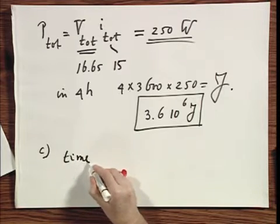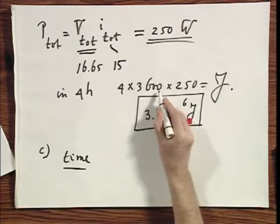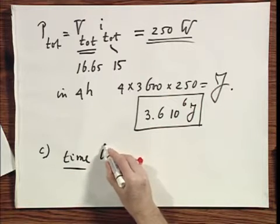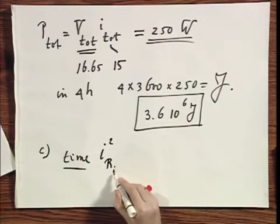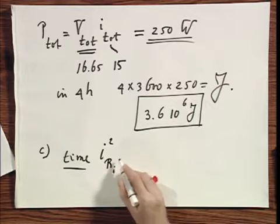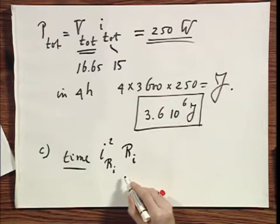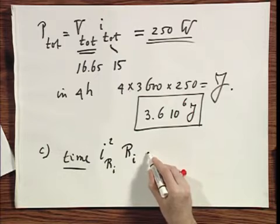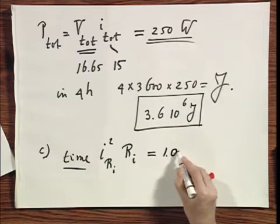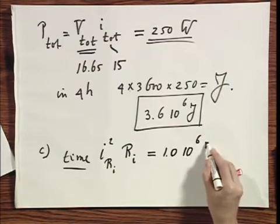Well that is of course the time, which is the same as four times thirty-six hundred seconds, times the current squared through that internal resistance, which is your fifteen amperes, times the internal resistance itself, which you also know is 0.31 ohms. And you find now, that this is a huge amount, this is one million joules.